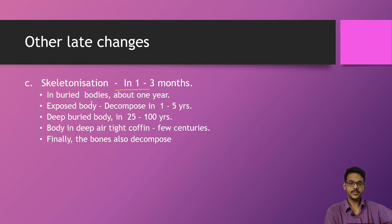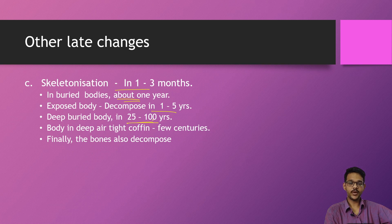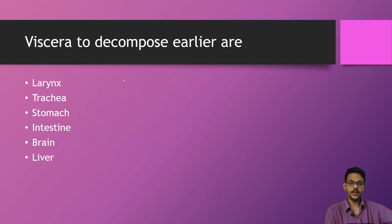Finally there is skeletonization, which may take up to one to three months. This changes based on how the body is present in the environment. In buried bodies it may take up to one year. Exposed bodies decompose in one to five years. Deeply buried bodies take up to 25 to 100 years. A body in a deep airtight coffin may take up to a few centuries.